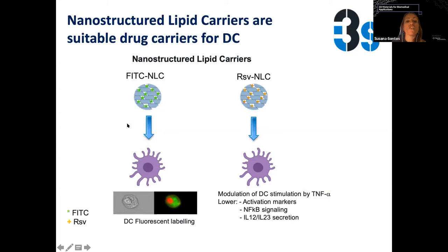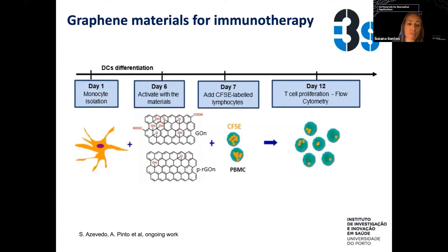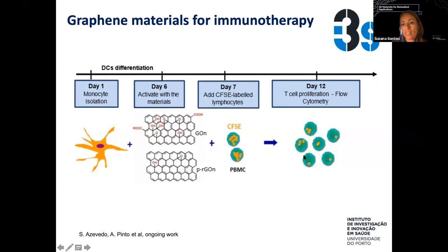In summary, we can use these particles to label cells when loaded with a fluorescent marker, or to interfere with their activation and its downstream consequences. The work with carbon materials is only starting, in collaboration with Artur Pinto. We are looking at how those materials can condition the activation of dendritic cells, which can then activate an adaptive immune response, measured by T cell proliferation — since when T cells are specifically stimulated, proliferation is one of their first responses. This work is ongoing.